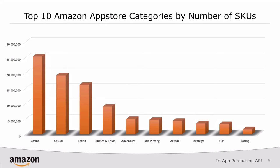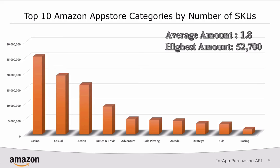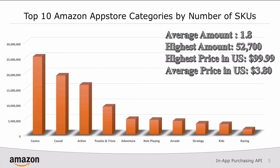Number 10 is racing, coming in around one and a half million. Some other interesting numbers: the average amount of SKUs per app is about two SKUs per app. The highest amount of SKUs in any single app or game in the store today is a little over 52,000. The highest price in the US for an available SKU is $100, which happens to be the maximum you can currently set. The average price in the US today is $3.80 across all categories, not just the top 10 shown here.